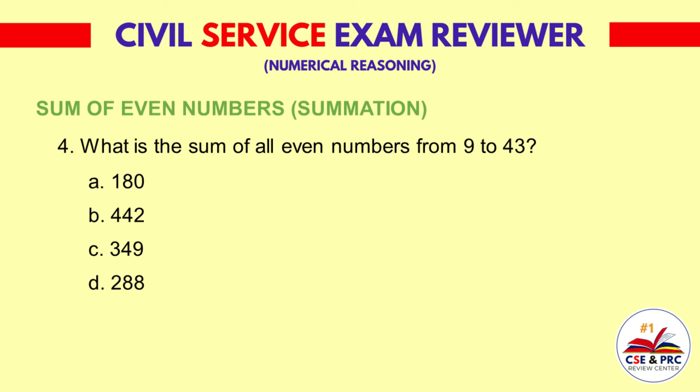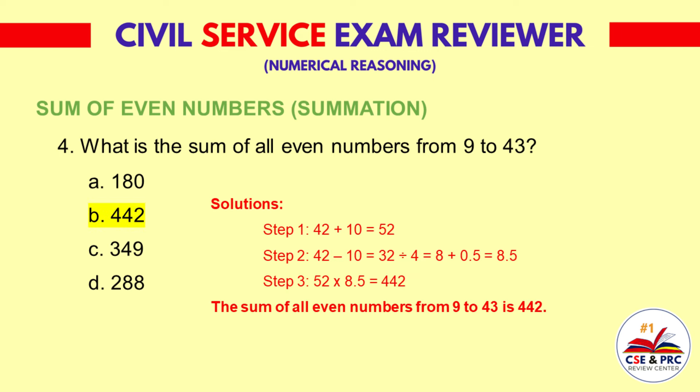Question 4: What is the sum of all even numbers from 9 to 43? a. 180  b. 442  c. 349  d. 288. The answer is b. 442.